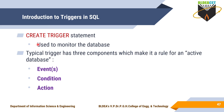CREATE TRIGGER statement is used to monitor the database while making transactions. A trigger has three components which make it a rule for an active database: Events — any transaction that is performed; Condition — you must specify the condition for those events; and Action — if the condition is not satisfied, then you perform the action. These are the three rules used when performing a trigger.